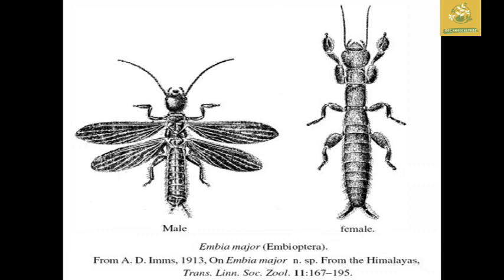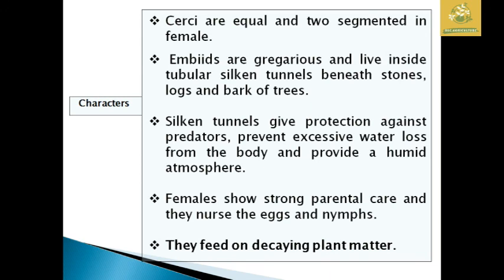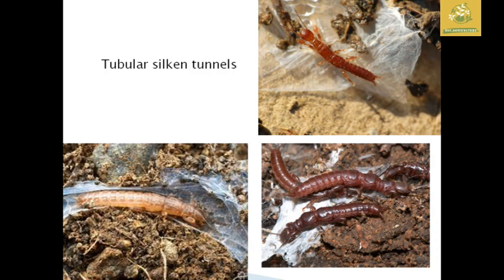Images show the male with wings and the wingless female. Embioptera mainly feed on decaying plant matter. The cerci are two-segmented and equal. They are gregarious and live inside tubular silk tubes beneath stones, rocks, and bark of trees. Females show strong parental care, nursing eggs and nymphs until they become adults.